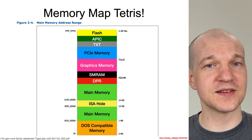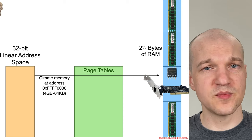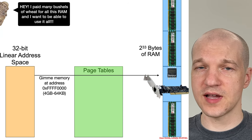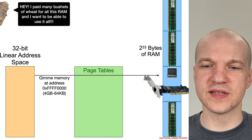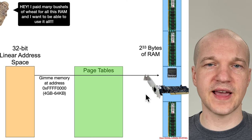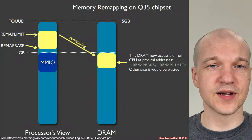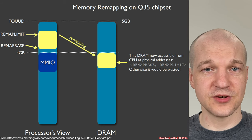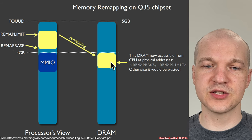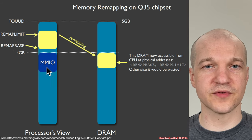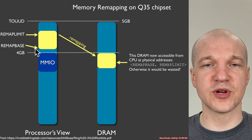Poor Gilgamesh, who paid many bushels of wheat for his 8 gigabytes of RAM, doesn't want to actually lose that memory to the memory-mapped I/O region. Intel has a solution for that — this very complicated-looking diagram. To make it simpler, there's a diagram from Invisible Things Lab. It turns out that there are a couple of registers that can be used to map a chunk of RAM that is otherwise stolen from the physical address space by memory-mapped I/O.